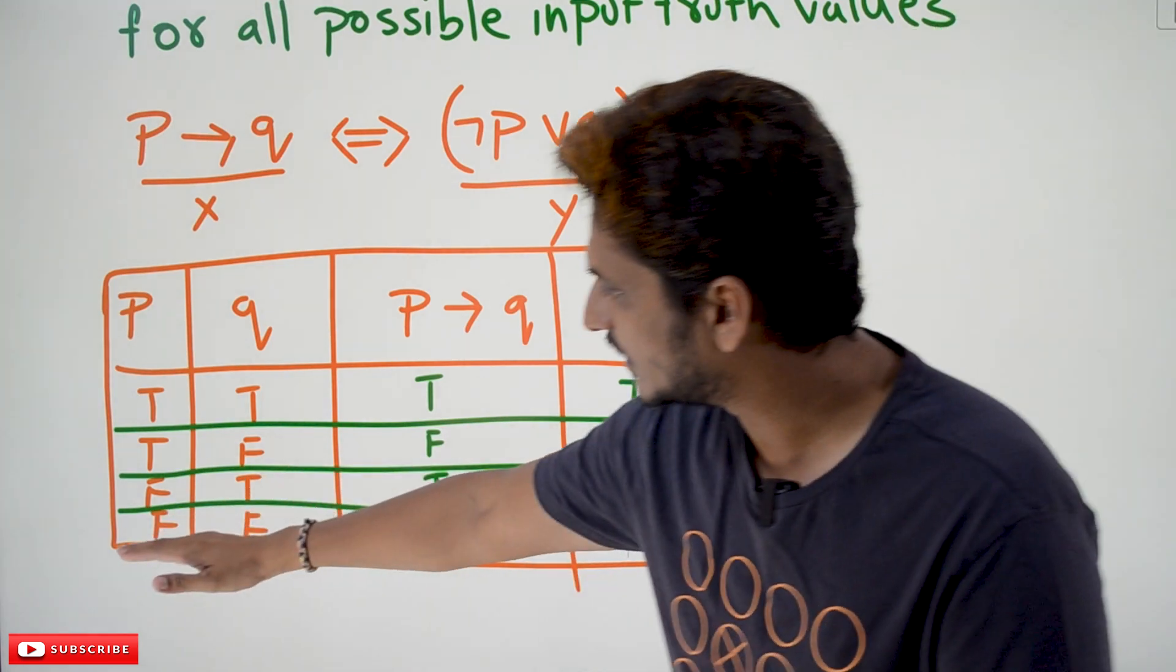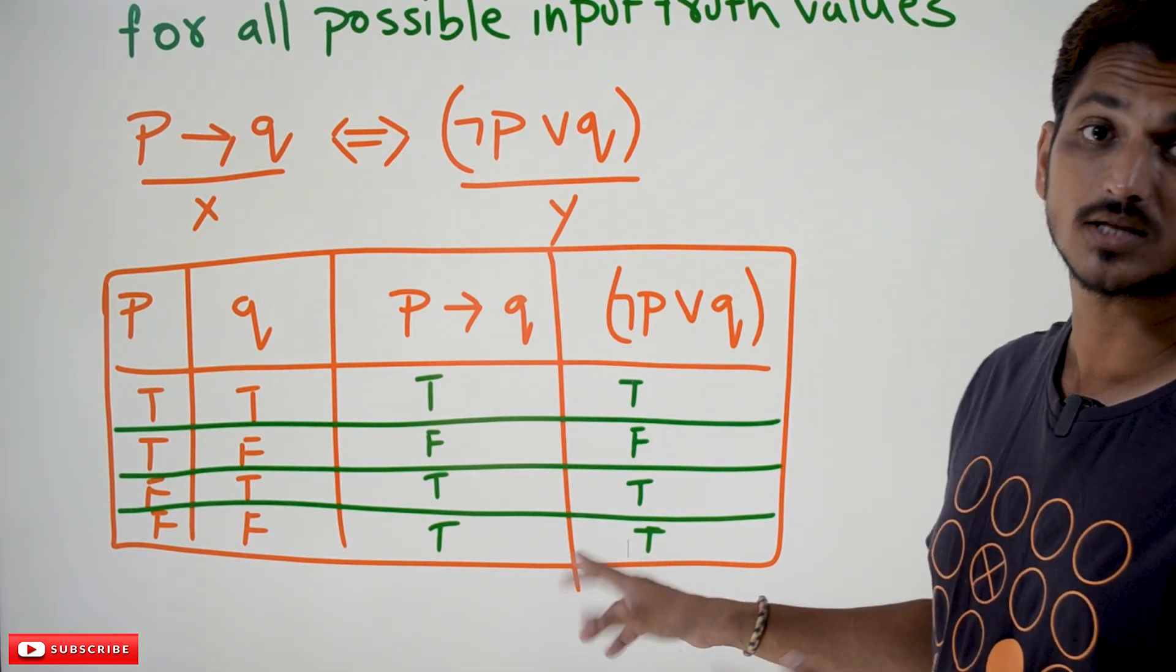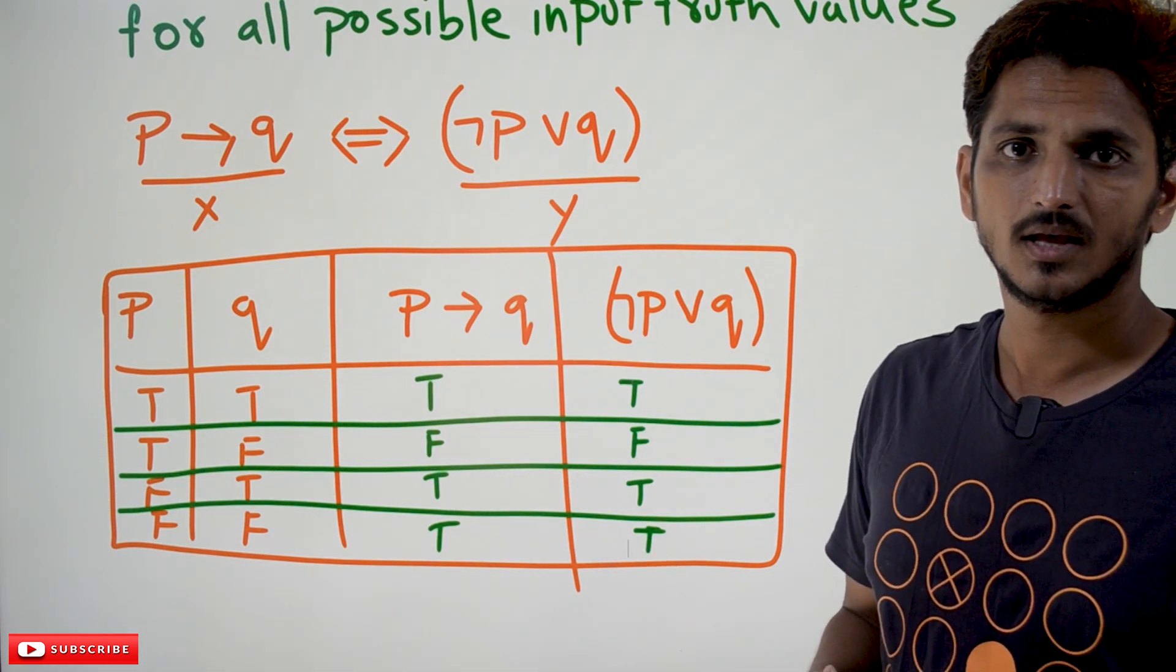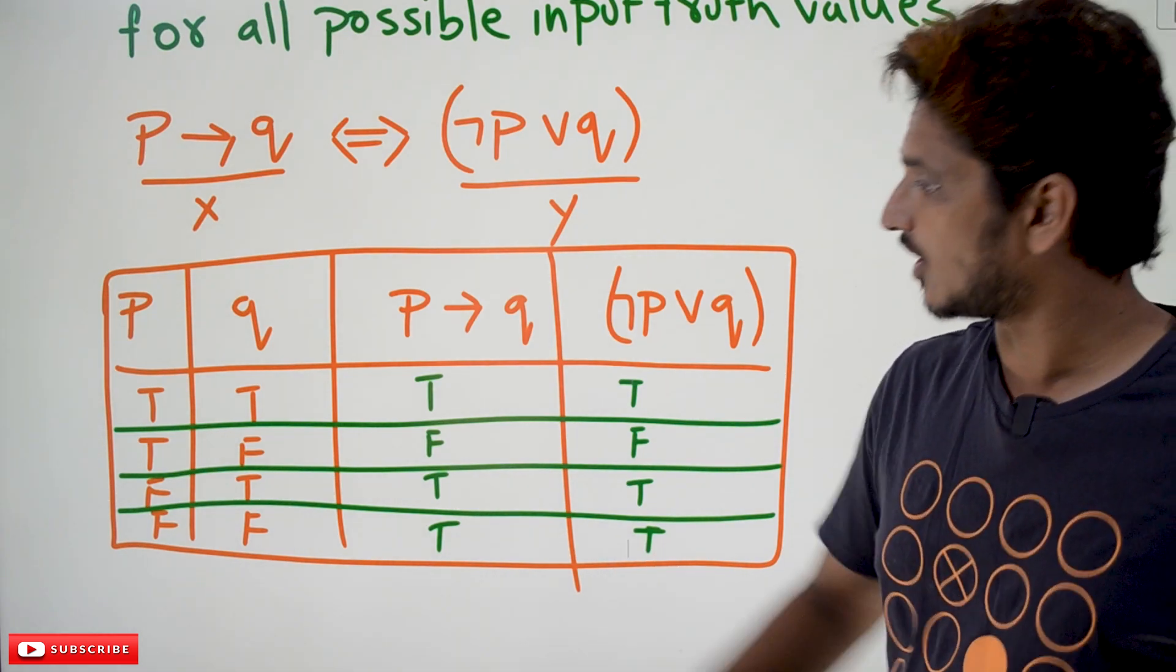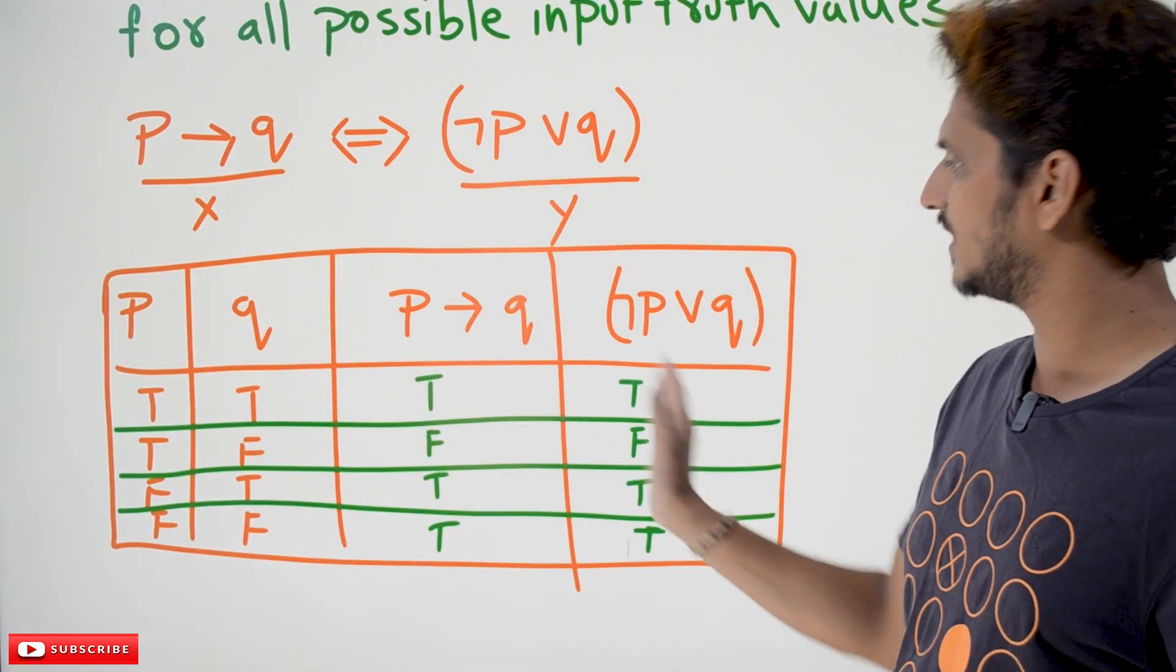Take the last one. F and F means false and false. What is the output? True and true. Both are same. So, if this is maintained for all the possible input possibilities, both should be same.